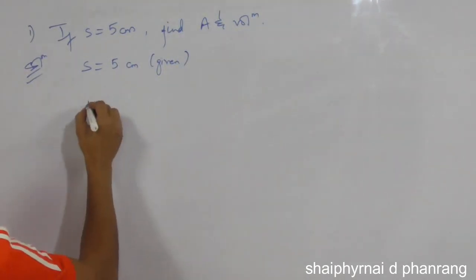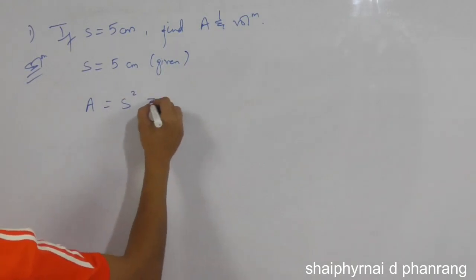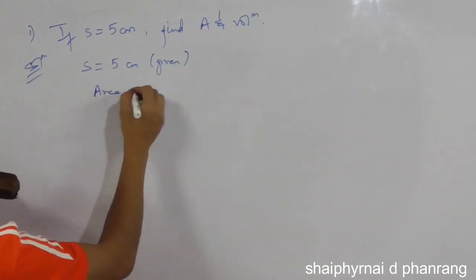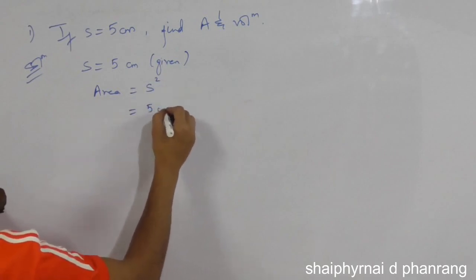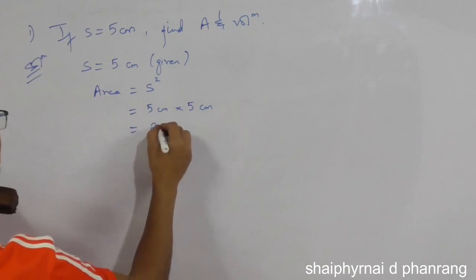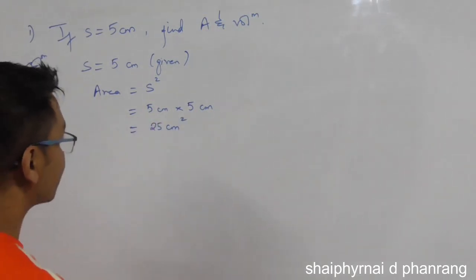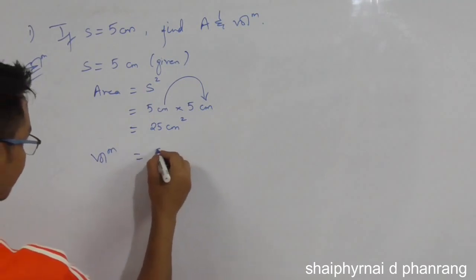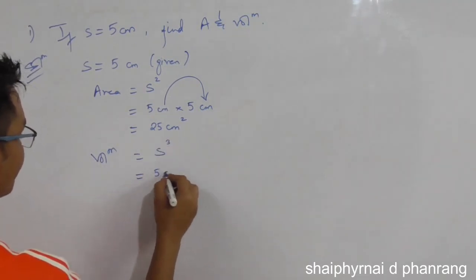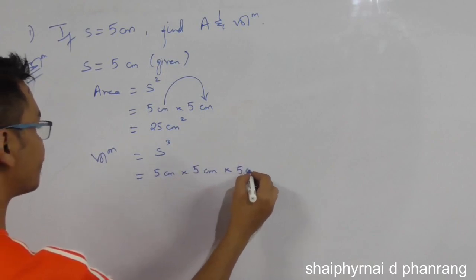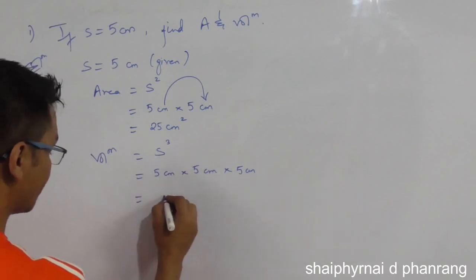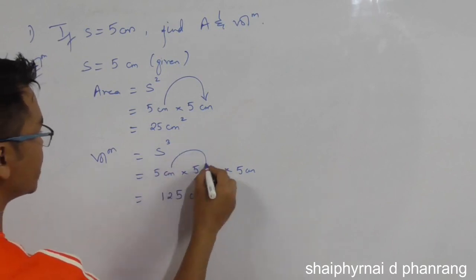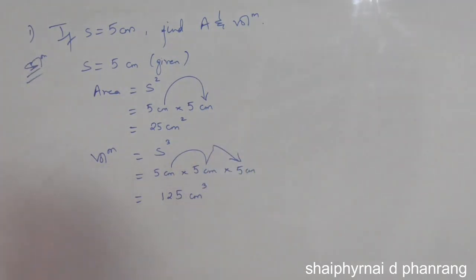The volume of space occupied by a body — 5 cm squared. This is centimeter into centimeter — centimeter squared. Now volume is 5 cm into 5 cm into 5 cm, which equals 5 × 5 × 5 = 125 centimeter cube. Centimeter into centimeter into centimeter is equal to centimeter cube.